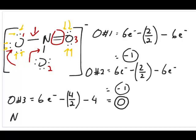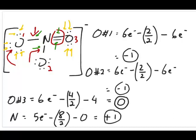Lastly, we calculate nitrogen's formal charge. The free nitrogen atom has a valence of five — it's in group 5A. Looking at the structure, nitrogen has four bonds total, meaning eight bonding electrons, so eight divided by two equals four. There are no lone pair electrons on nitrogen, so that's zero. Five minus four minus zero equals positive one. That's the formal charge for nitrogen.